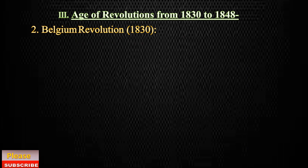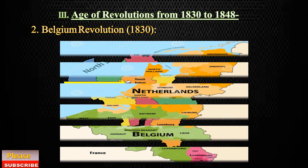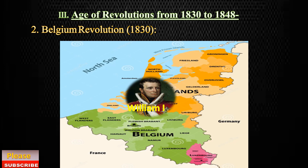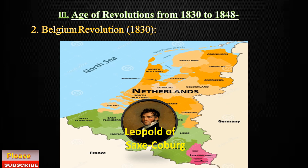This revolution gave rise to the Belgium Revolution. Around the same time, in 1830, there was also a revolution in Brussels, Belgium. At that time, Belgium was part of the United Kingdom of the Netherlands, but the people of Brussels regarded King William I's rule as tyrannical. They fought for their independence and created their own country. In 1831, Leopold of Saxe-Coburg became the first king of the Belgians, and the country adopted a constitutional monarchy, establishing itself as a separate country from the Netherlands.